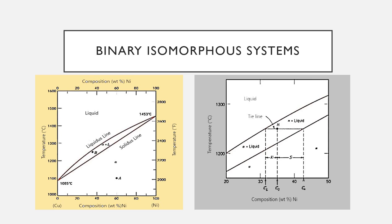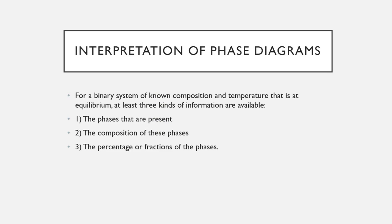Heating pure copper corresponds to moving vertically up the left-hand temperature axis. Copper remains solid until its melting temperature is reached; the solid-to-liquid transformation takes place at the melting temperature. For any composition other than pure components, melting occurs over a range of temperatures between the solidus and liquidus lines. For example, upon heating an alloy of 50 wt% Ni / 50 wt% Cu, melting begins at approximately 1280°C and the alloy is completely liquid at about 1320°C.